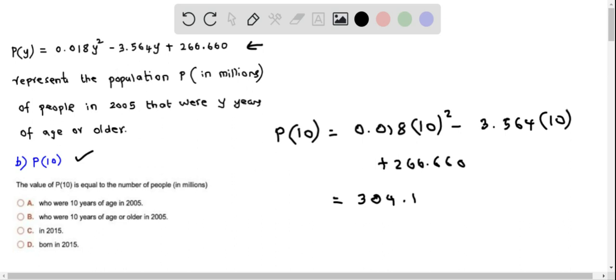Now let's answer the question that is the meaning of p of 10 is equal to the number of people in millions. So when you look at the definition of p of y we clearly understand that p of y represents the population of people in millions in 2005 that were y years of age or older.